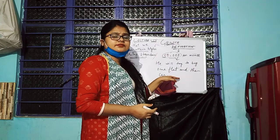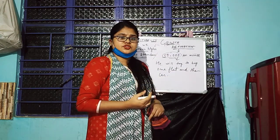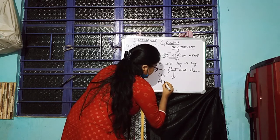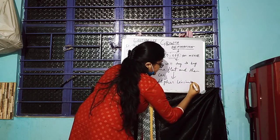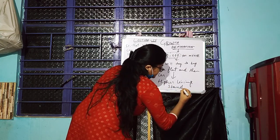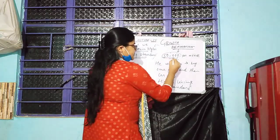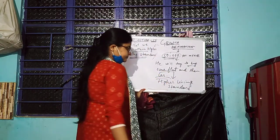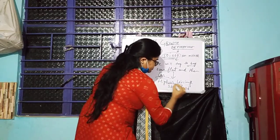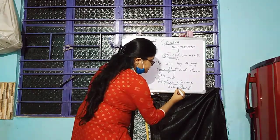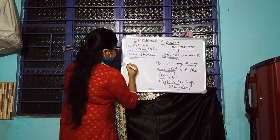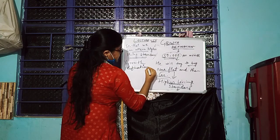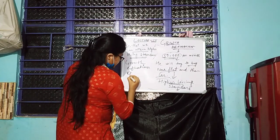So with his limited income, he will try to manage his family members, maintain the needs of his family members, and also try to buy one flat and a car. This will definitely give him satisfaction and a higher living standard. This is called the growth definition of economics.